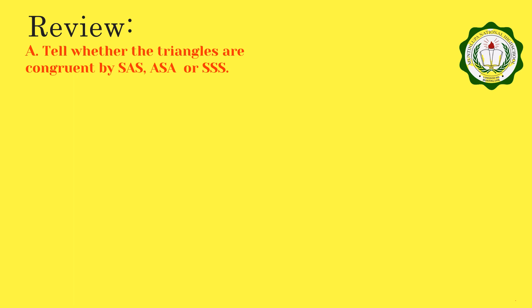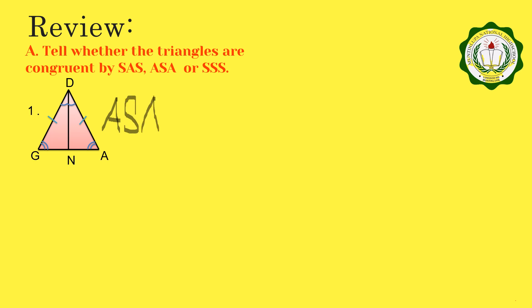Let us have a review first. We are to tell whether the triangles are congruent by SAS, ASA, or SSS congruence postulate. In number 1 figure, as you can see, it is similarly marked. Based on the given markings, the congruent parts are: angle G congruent to angle A, side GD congruent to side AD, and angle GDN congruent to angle ADN. We have an angle, an included side, and an angle. So these two triangles are congruent by ASA congruence postulate.